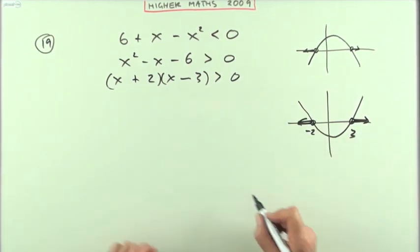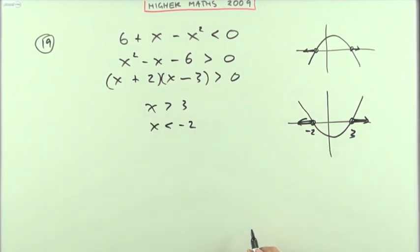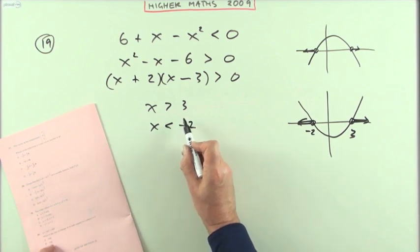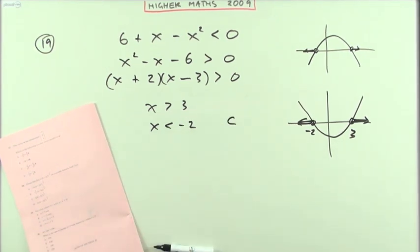I want x to be greater than 3, and I want x to be less than negative 2. You can combine it into a single statement if you like, or that might do just on its own for selecting from the answers. So x is greater than 3, x is less than negative 2, that was c, and they in fact just left them separate.